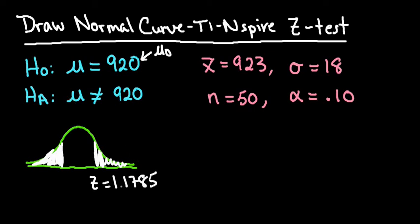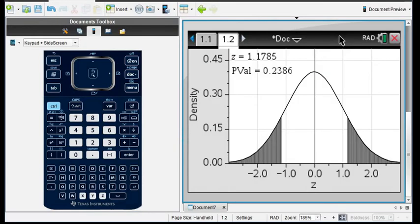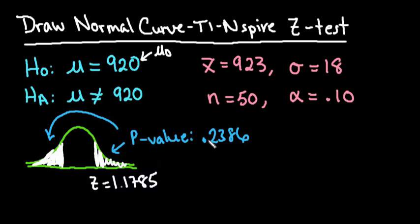And my p-value represents the area that I shaded. So my p-value, half of it is on the right-hand side and half of it is on the left-hand side, represents 0.2386. Let me just verify my numbers that I have written on my paper. So 0.2386 is my p-value.